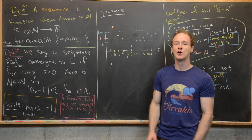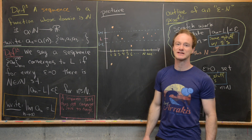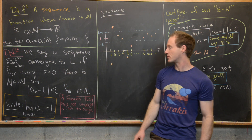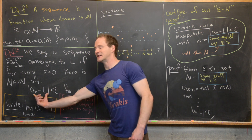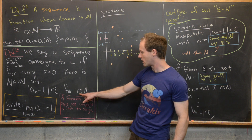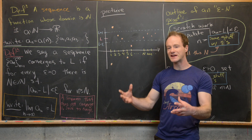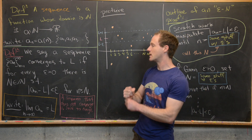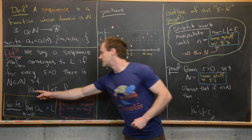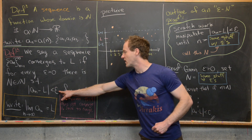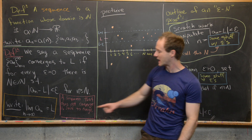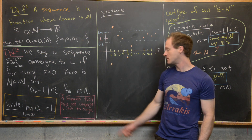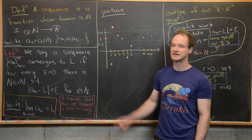If we're talking about sequences we probably want to talk about their limits. We say that a sequence converges to a limit L if for every epsilon greater than 0 there is a natural number N such that the absolute value of a_n minus L is less than epsilon for all n greater than this capital N. In other words, for any epsilon — think of it as a very small number — after some point N in the sequence, the values are always within epsilon of the limit L. We write this as the limit as n goes to infinity of a_n equals L. A sequence is divergent if it does not converge.